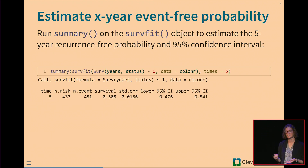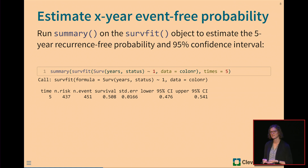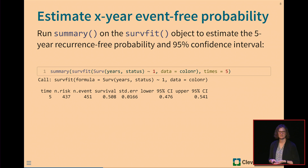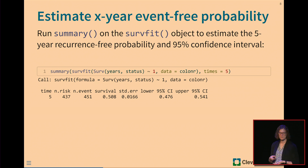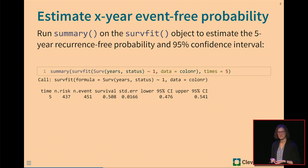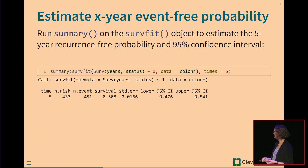We might also want to know the X-year event-free probability. For the five-year recurrence-free probability, we call summary on our survfit object and find that 0.508 is the five-year recurrence-free survival probability, with a 95% confidence interval.